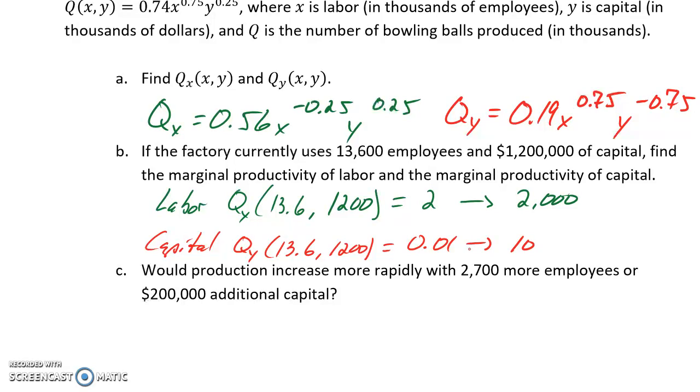Then we're asked, would production increase more rapidly with 2,700 more employees, or 200,000 additional dollars in capital? We know that for every one unit increase of labor, our productivity increases by 2, meaning that for an increase of 1,000 units of labor, so an additional 1,000 employees, productivity will increase by 2,000. In this case, we are thinking about increasing by 2,700 employees, so that would be 2.7 times 2, giving us 5.4. If we increase our employees by 2,700, we would see an increase in productivity of 5.4, or 5,400 units.